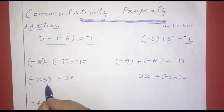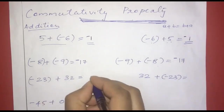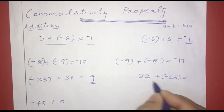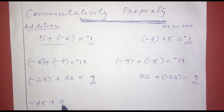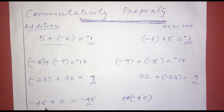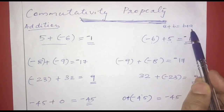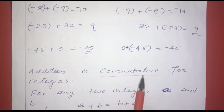Next: negative 23 plus 32. Opposite signs, 32 minus 23 is 9, the larger is positive, so positive 9. Checking: 32 plus negative 23. The answer is also positive 9. With any examples of integers, we verify a plus b equals b plus a. Addition is commutative for integers.